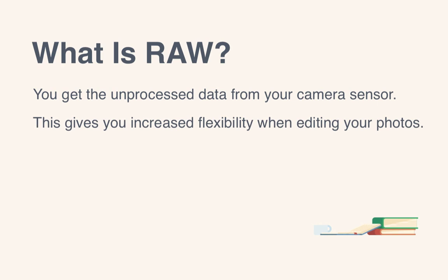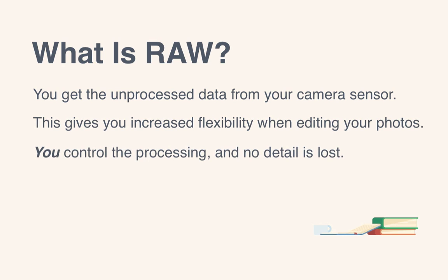However, because your computer can't display a raw photo correctly, it has to be converted into an image that you can work with. You control the processing and no detail is lost from the image because you're working with an uncompressed file. When you just shoot in JPEG, your camera does a lot of the processing itself and also compresses the image, which causes you to lose some information.